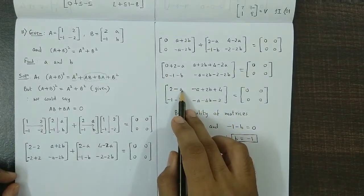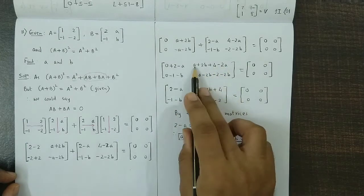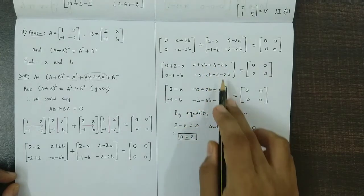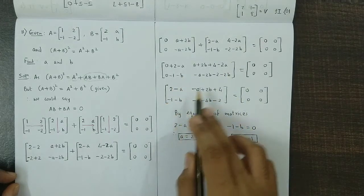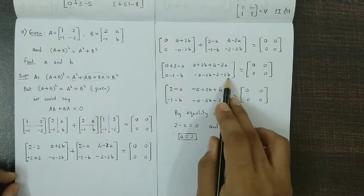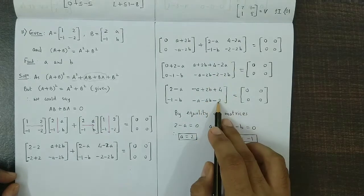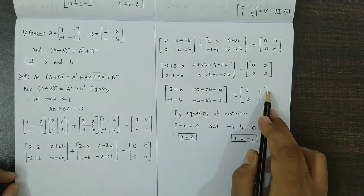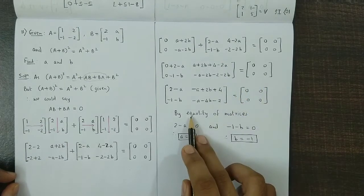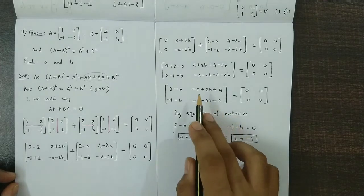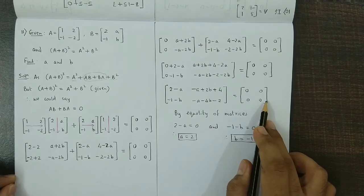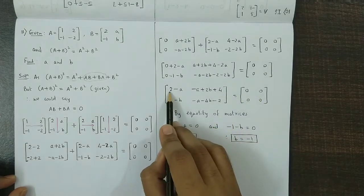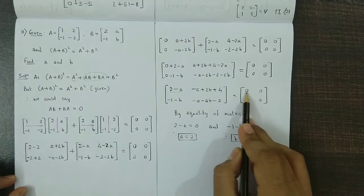Simplifying, we get the matrix: 2 minus a, minus a plus 2b plus 4 in the first row; minus 1 minus b, and minus a minus 4b minus 2 in the second row, equal to the zero matrix. We use the property of equality of matrices: if two matrices are equal, they must be of the same order and their corresponding elements are equal.